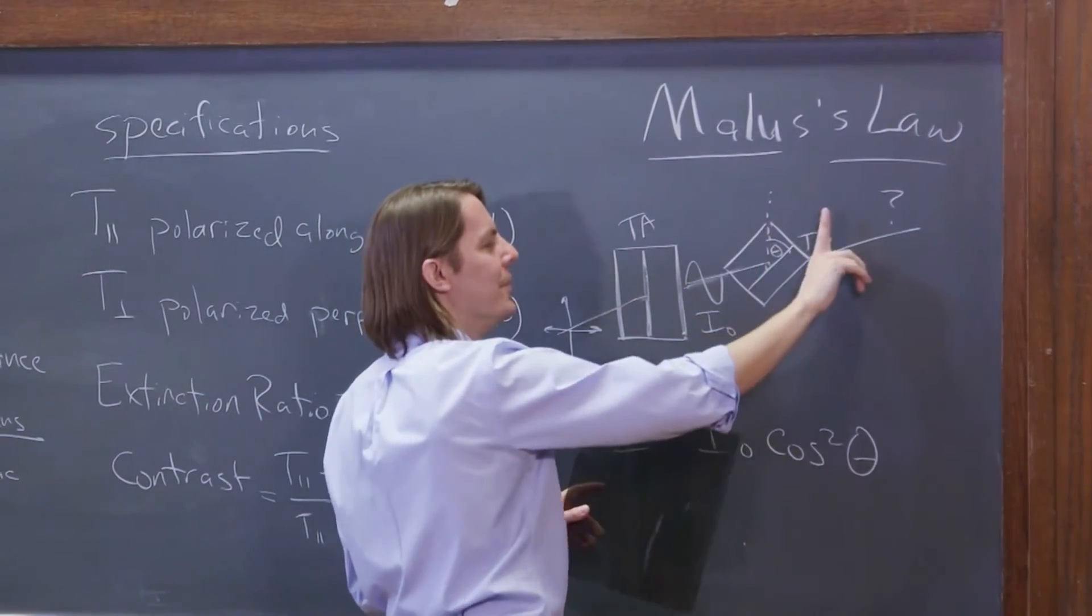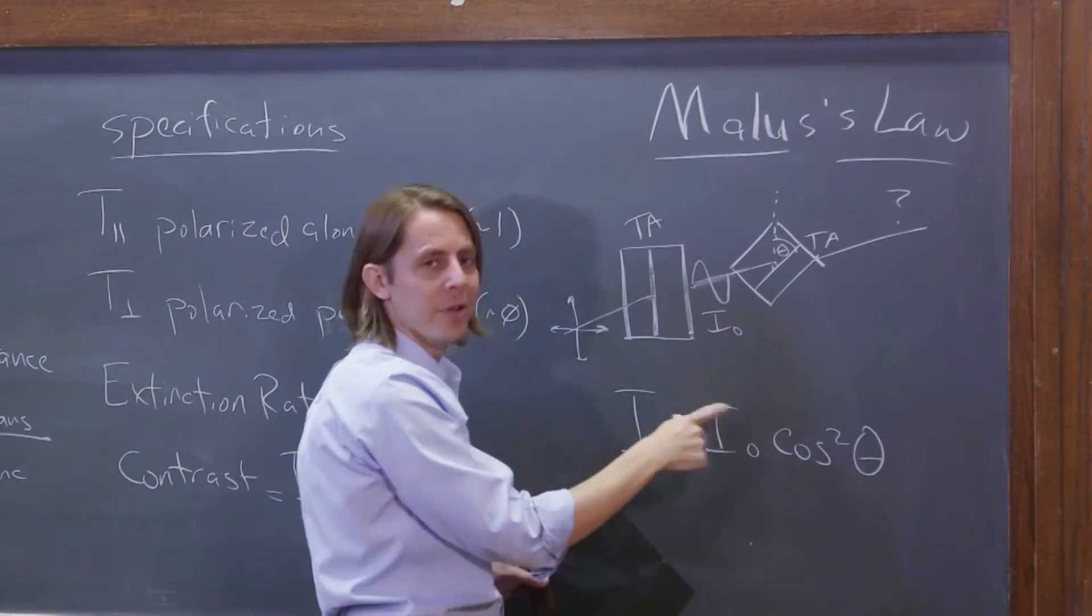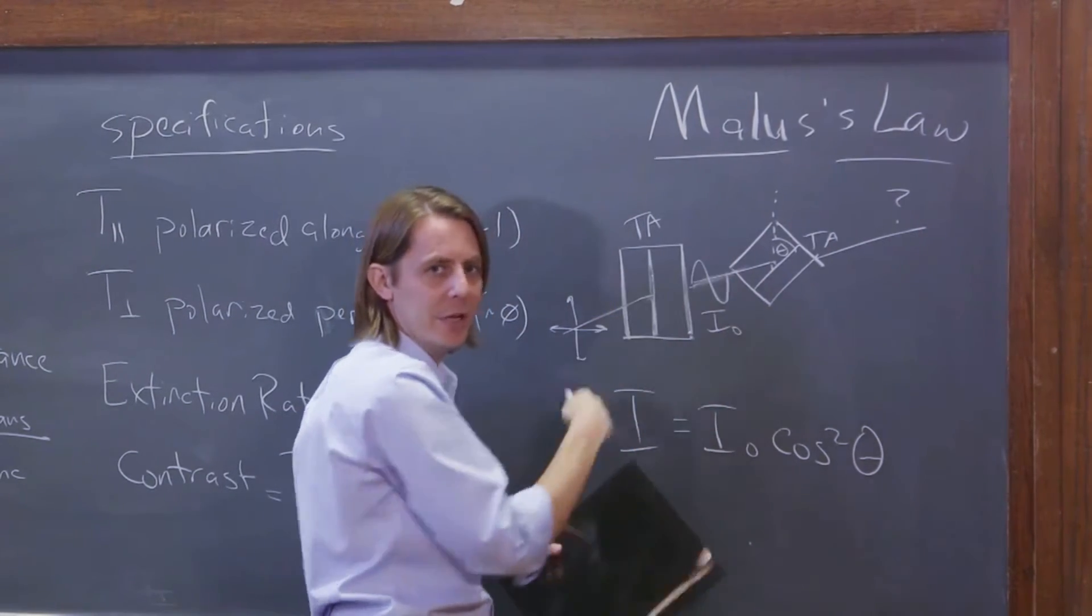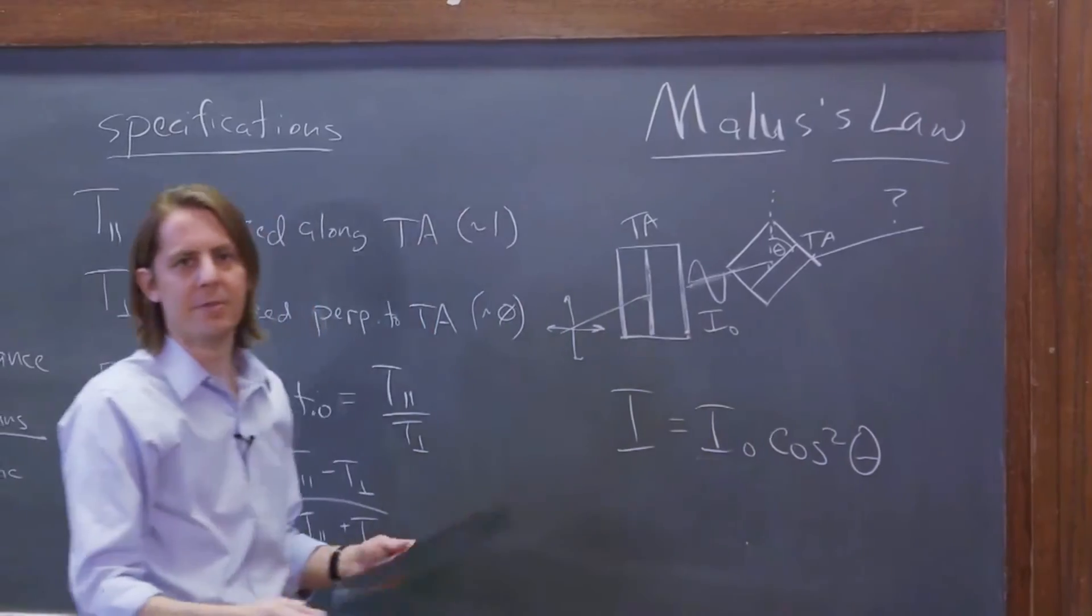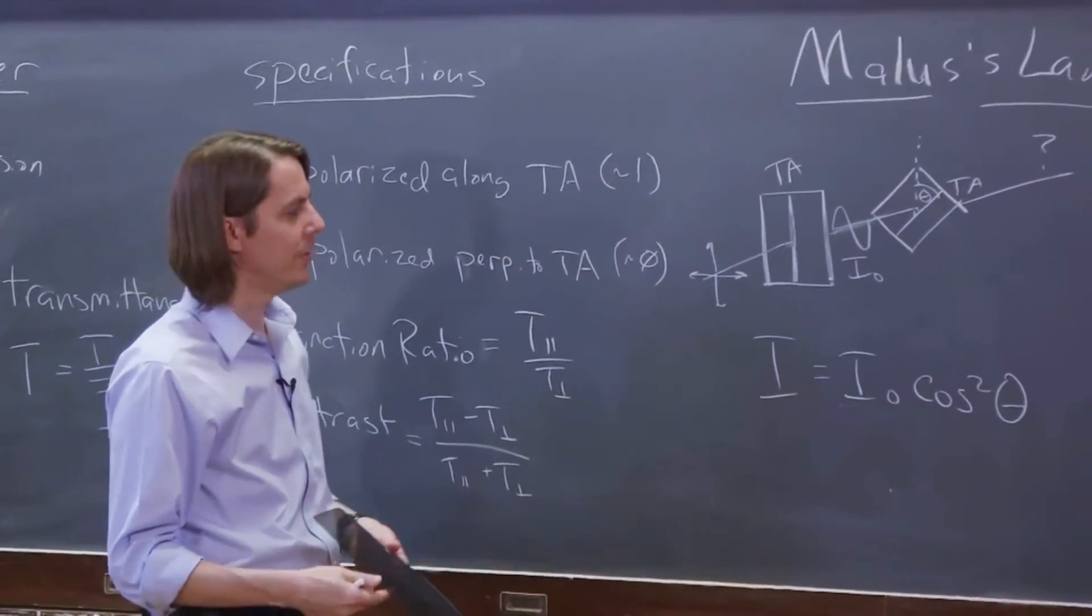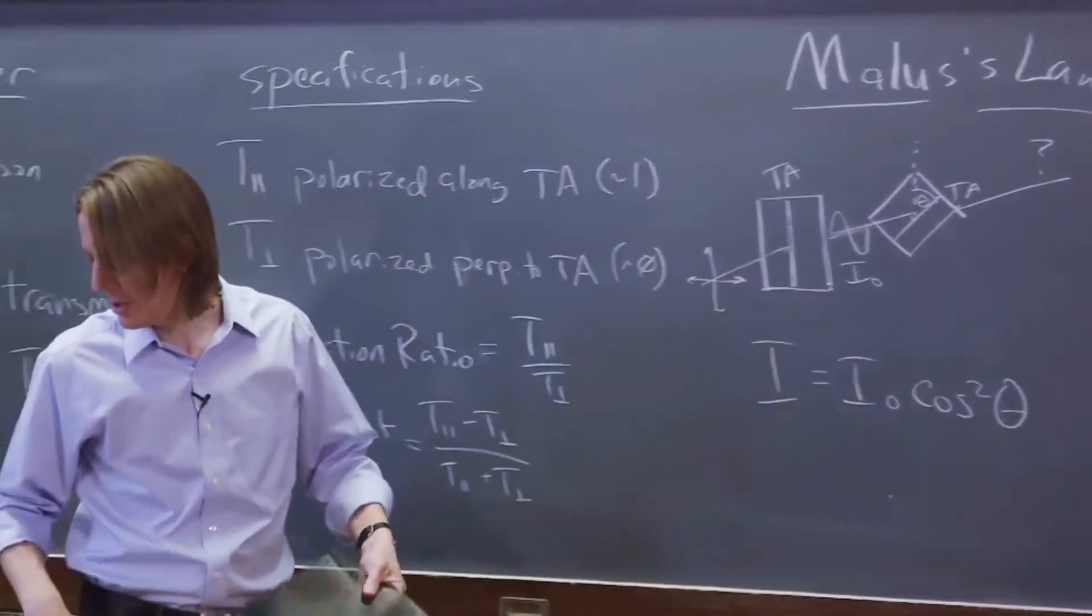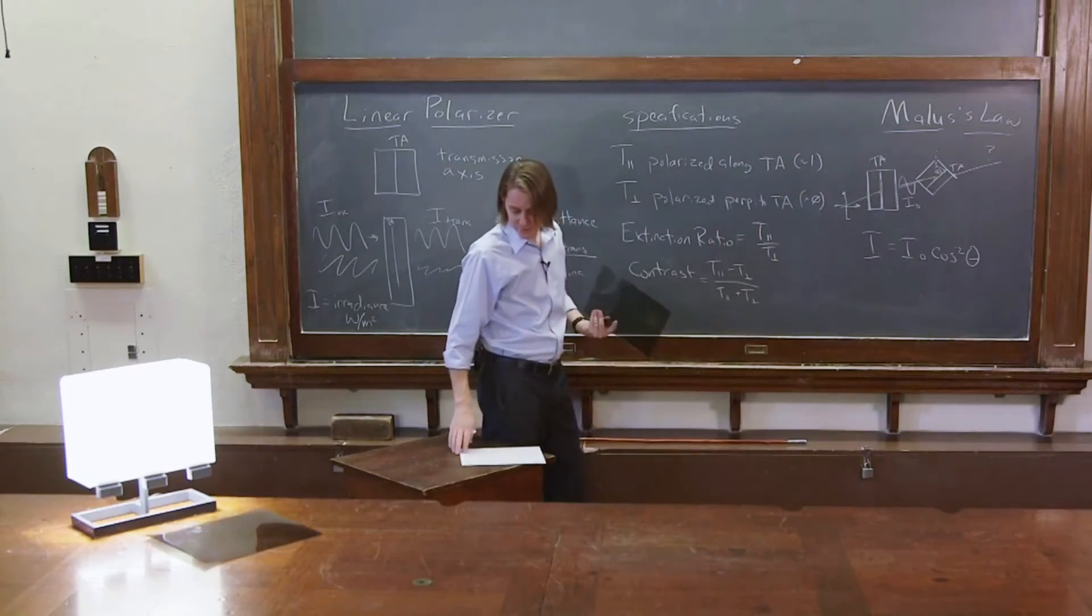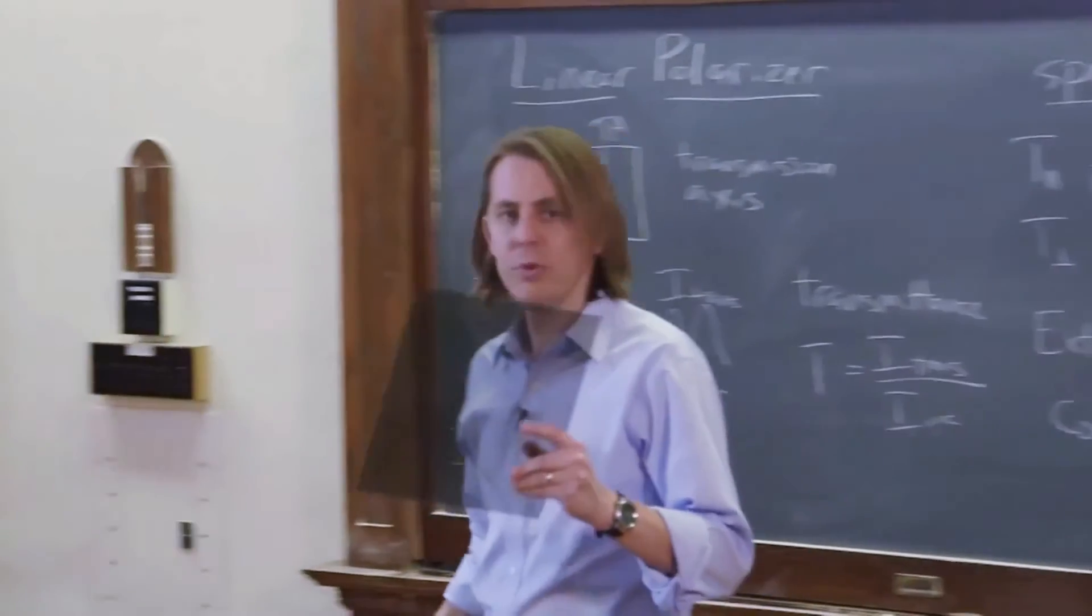So the E field that gets through is really just E naught cosine theta. But then you have to square things to get from the E field to the irradiance. So the reason it's cosine squared is we're talking about irradiances here, not E fields. If you want to write Malus's law for E field, it would just be times cosine theta. So it really is just the field component. It's really just taking the cosine of the field component.